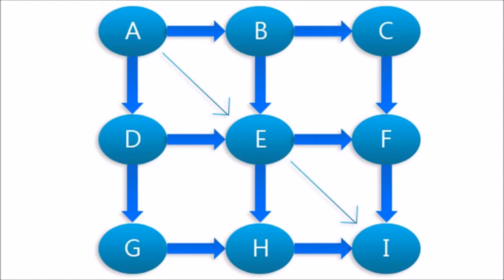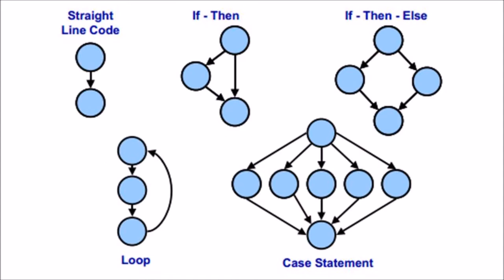In path testing method, the control flow graph of a program is designed to find a set of linearly independent paths of execution. Cyclomatic complexity is used to determine the number of linearly independent paths, and then test cases are generated for each path. Path testing gives complete branch coverage without covering all possible paths of the control flow graph.